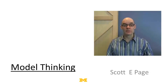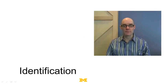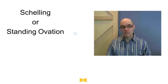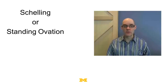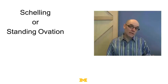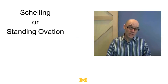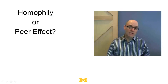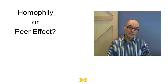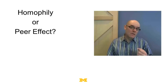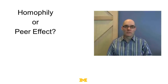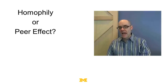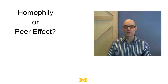In this last lecture in this module, I want to talk about something known as the identification problem. That is basically the question of how do you tell whether something occurred — whether people hanging out with each other and looking alike happened because of sorting, because of the Schelling model, or because of the standing ovation peer effect. Or to use the fancy academic terms, is this because of homophily — this idea that you want to be with people who are like you — or is it because of peer effects, where you act like the people you hang around with?